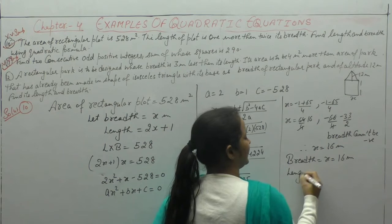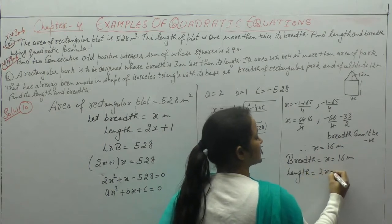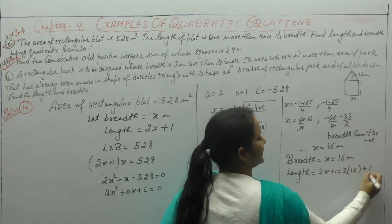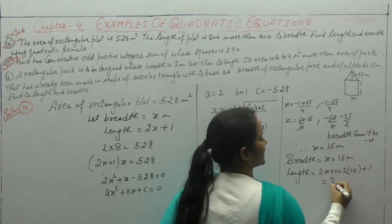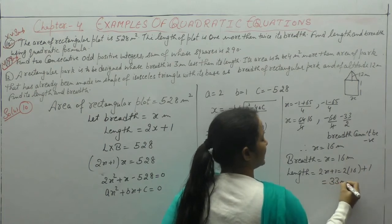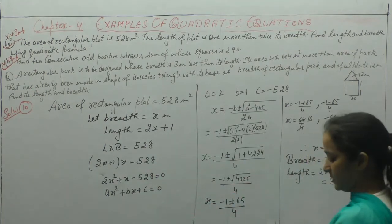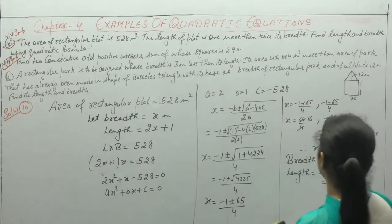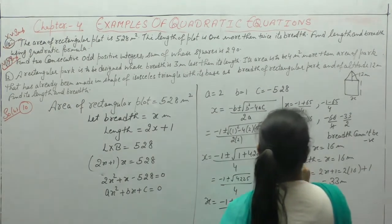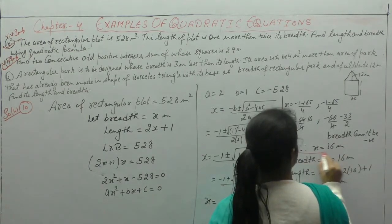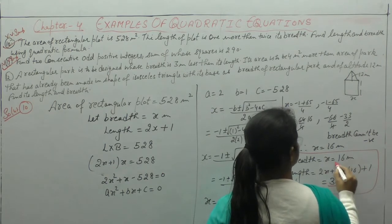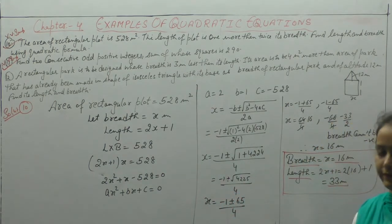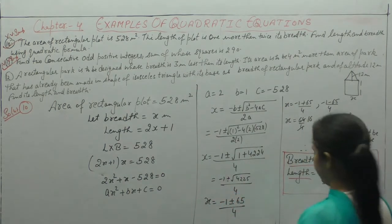And length = 2x + 1 = 2×16 + 1 = 32 + 1 = 33 meters. So length is 33 meters and breadth is 16 meters. Clear? Now next.